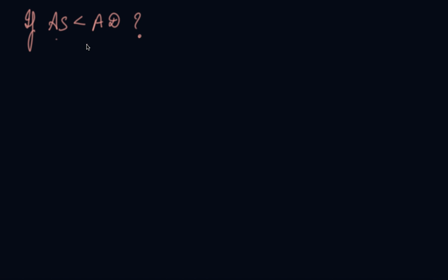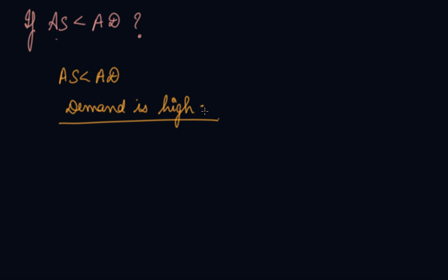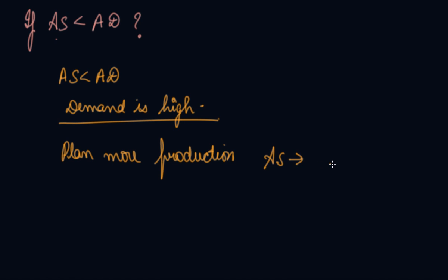Now, what happens if aggregate supply is less than aggregate demand? We assumed that aggregate supply is perfectly elastic and adjusts itself according to aggregate demand. If aggregate supply is less than aggregate demand, the demand for goods and services is high but supply is less. So the producer will plan more production and accordingly start supplying more, which helps in increasing aggregate supply. Again, equilibrium will be restored when aggregate supply equals aggregate demand.